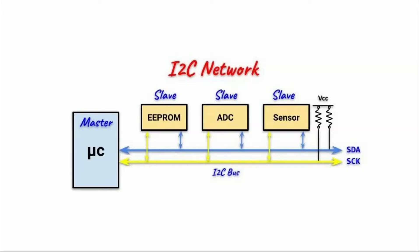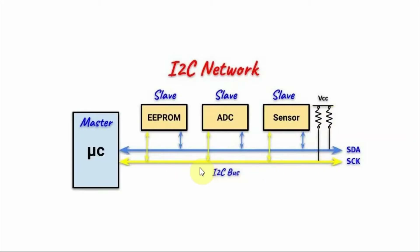A block diagram of an I2C network is shown here. We have a microcontroller programmed as an I2C master device, interfaced with slave IO peripherals through the I2C bus, which is made of two lines: the serial clock line and the serial data line. The I2C bus is connected to pull-up resistors. The serial clock line carries the clock generated by the microcontroller to synchronize communication with the slave devices, and the serial data line carries data between the microcontroller and the IO peripherals.